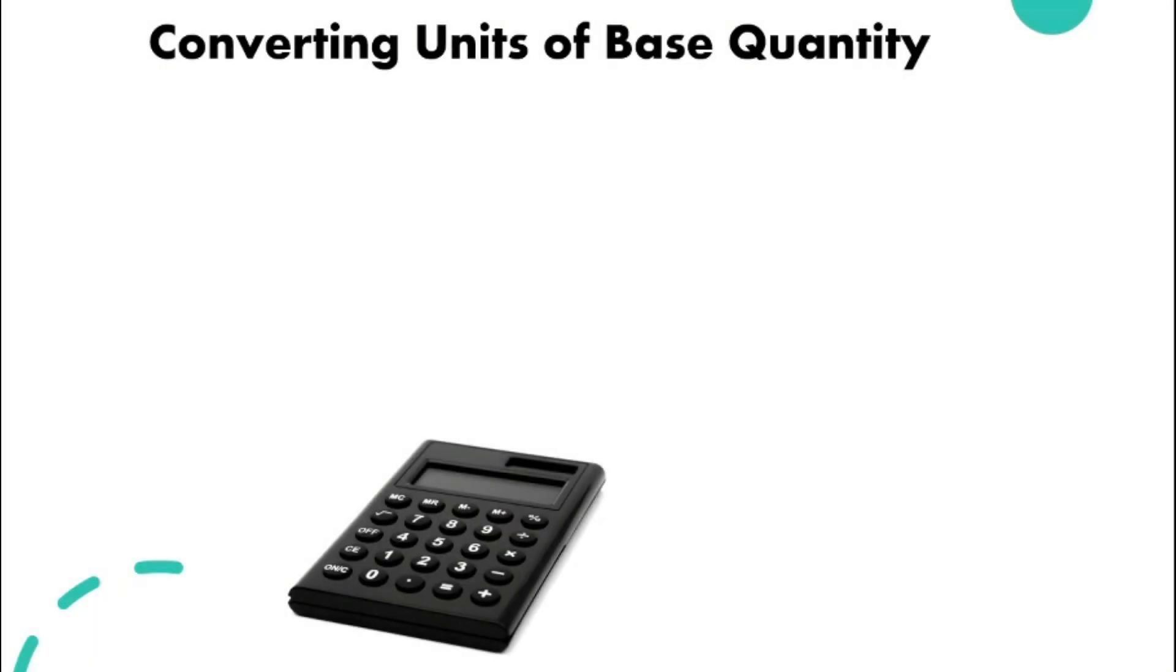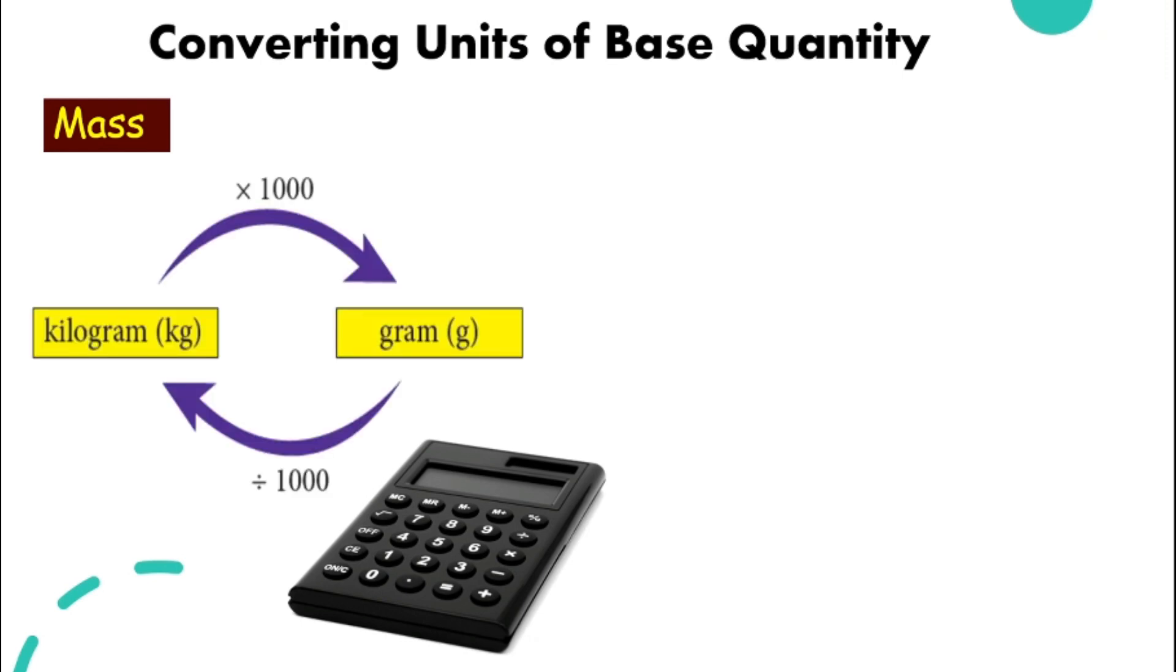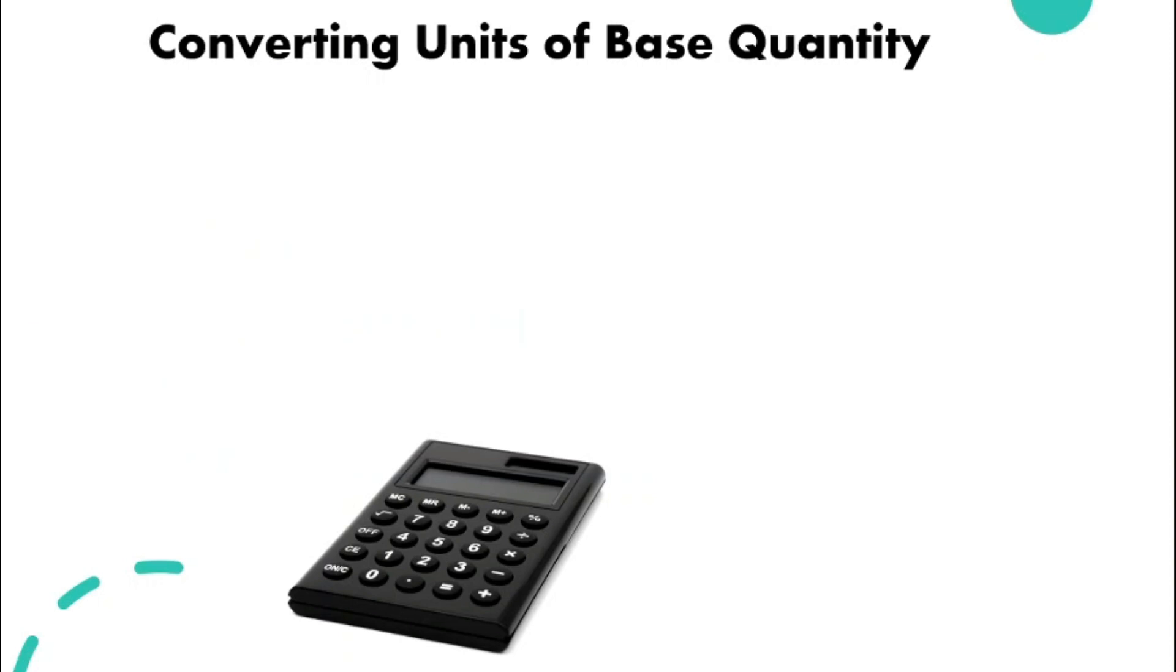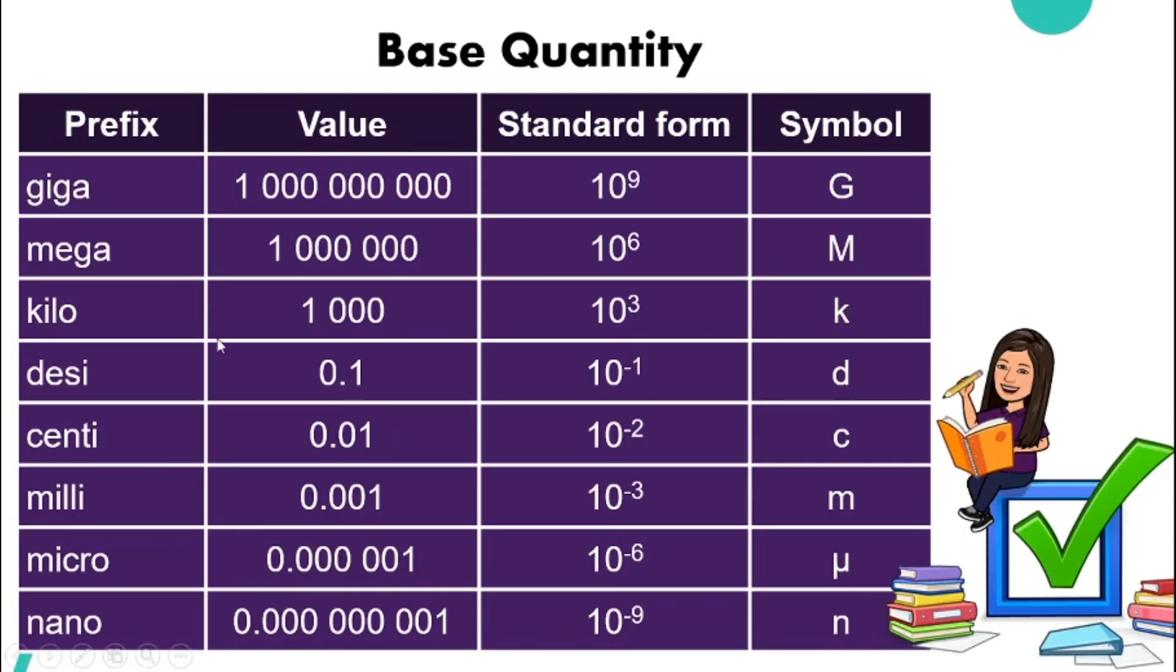Let's take a look at how we can convert this units of the base quantity and also the use of prefix. For example, we have kilogram and gram. Kilo, if we go back to the table here, you can see here, kilo is 10 to the power of 3 meaning 1000. There are 3 zeros behind the 1. That's how we use the table.